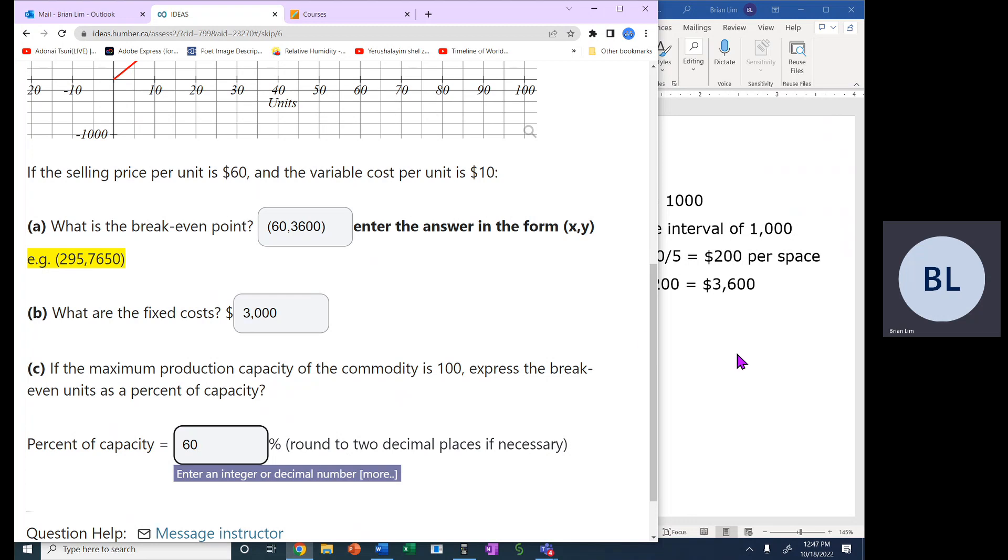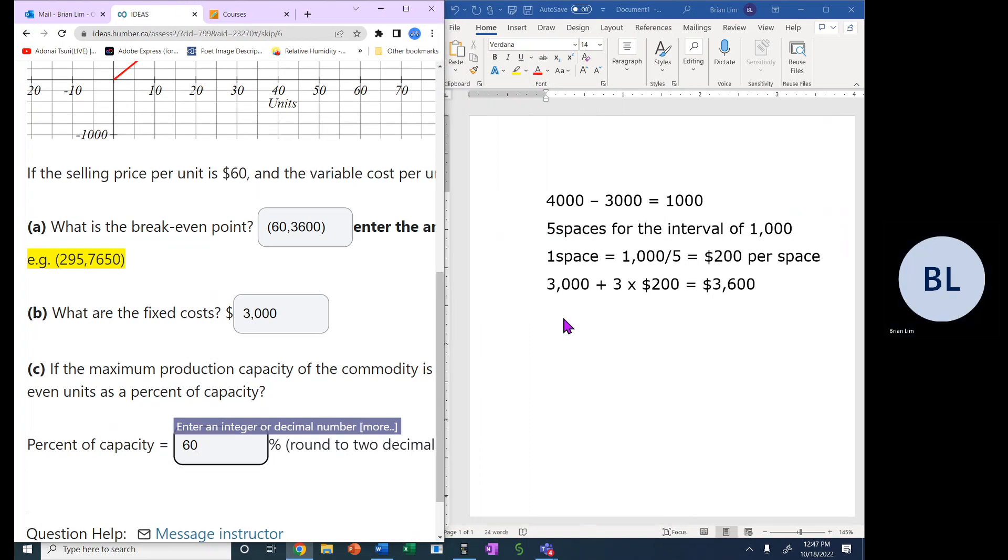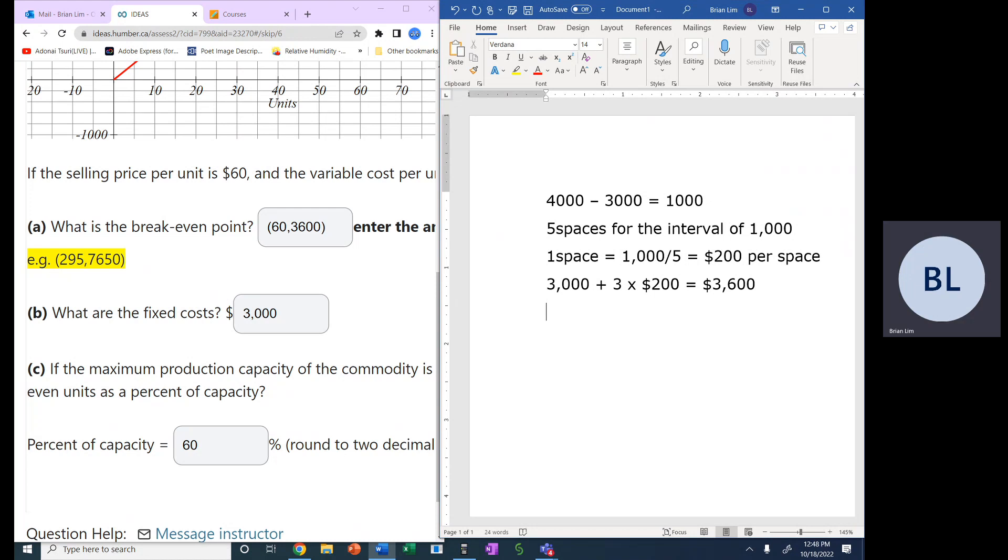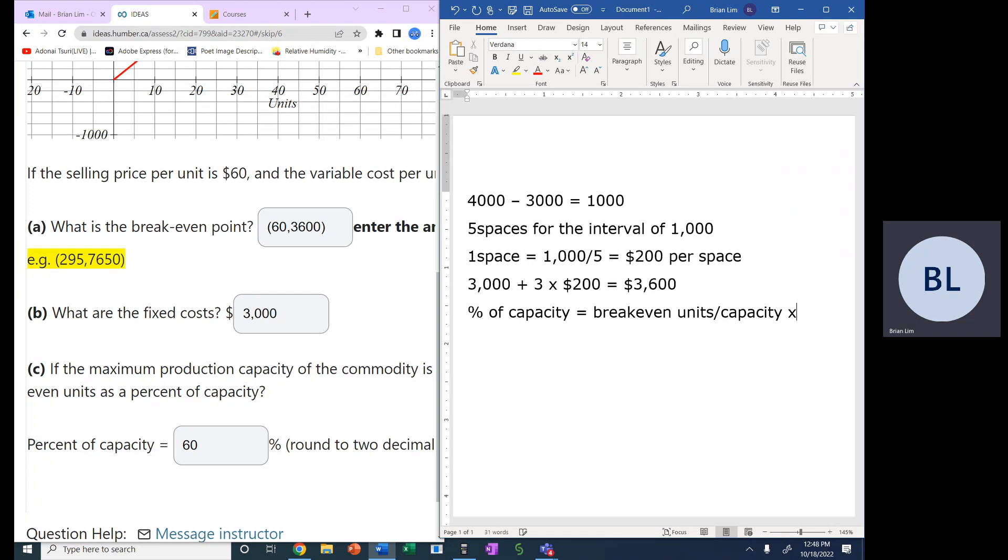Now, if you're really concerned about that, then percent of capacity, we will just do that here. So you want percent of capacity would be equal to what? Well, it's breakeven units divided by the capacity. And then you multiply that by 100 and we get the percent. So in this case, if we follow that reasoning, then it could be equal to 60 divided by 100 times 100. And that would give us the 60 and that's 60%. So that is how we do that question.